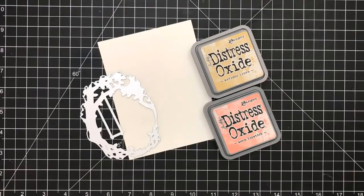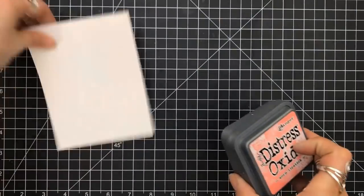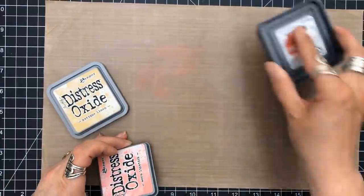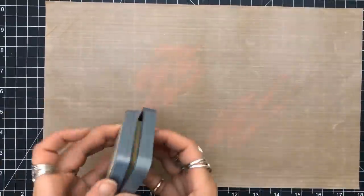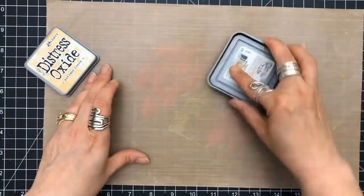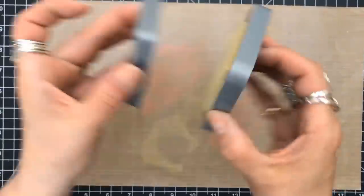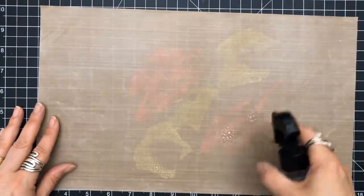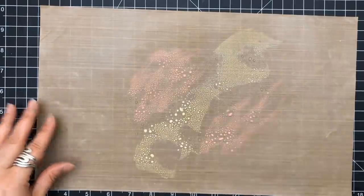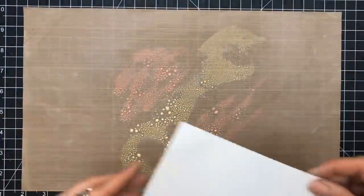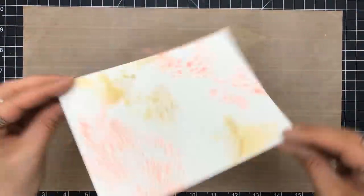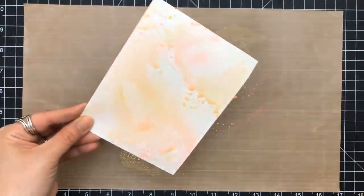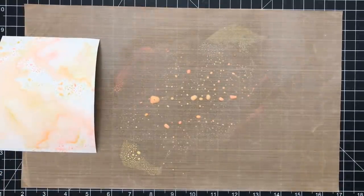For card number seven, I was still in an ink smooshing mood. This time I'm choosing warm lipstick and antique linen. A lot of people think antique linen is like an ivory. Really, it's got a yellow base to it. When I'm mixing this with worn lipstick, I'm going to get a coral color. But it's going to be soft. I wanted to stay very pastel.